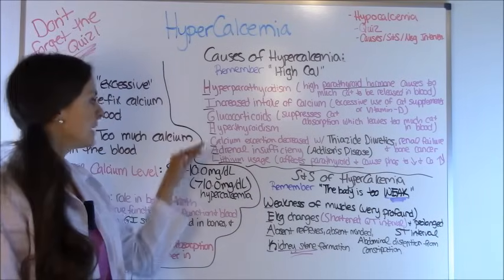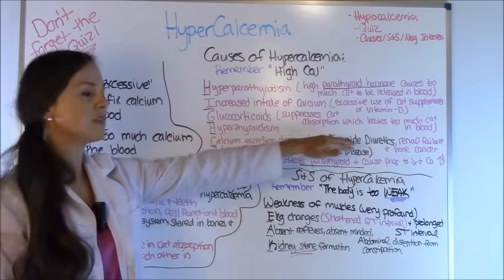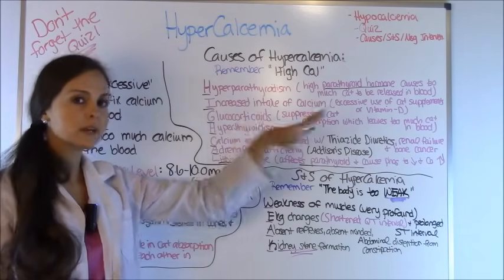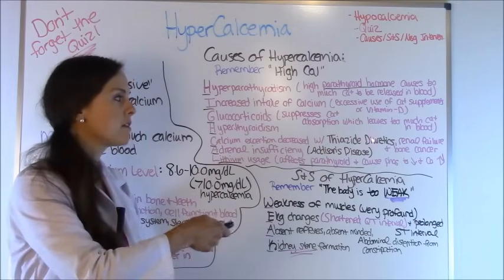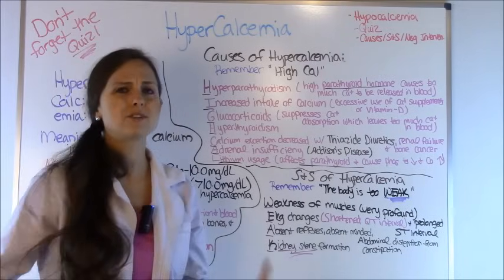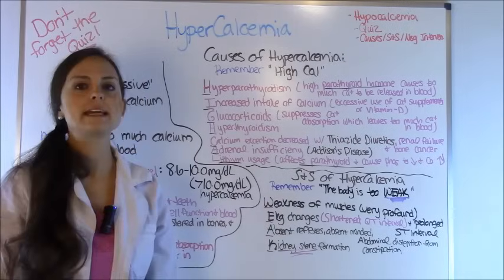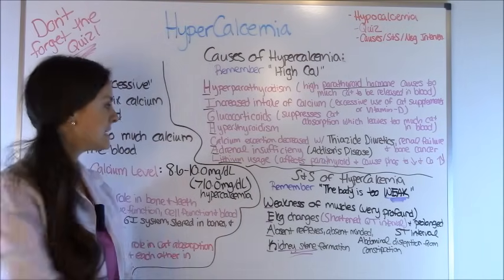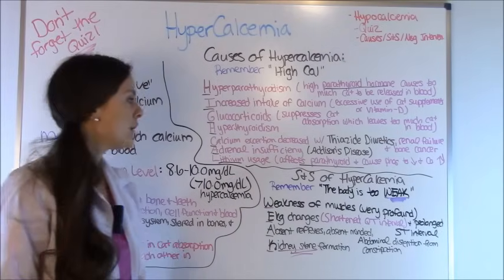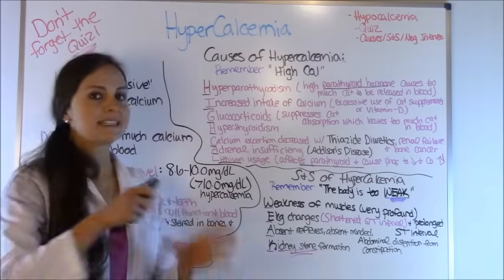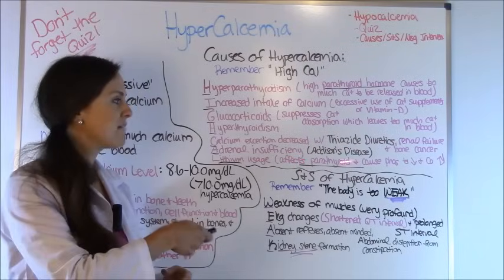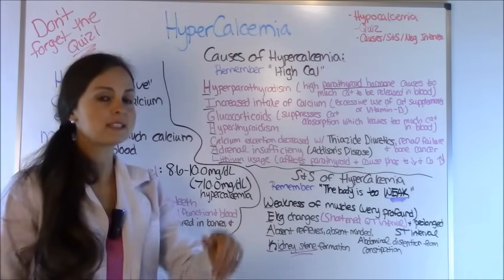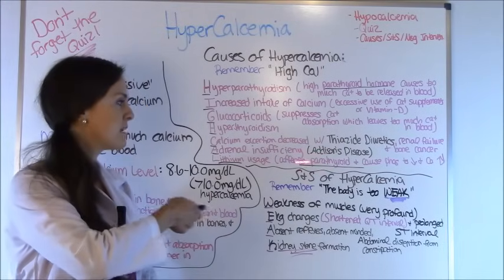H is for hyperthyroidism. C stands for calcium excretion decrease — from thiazide diuretics, renal failure, and bone cancer — which prevents you from getting rid of calcium through the kidneys. Thiazide diuretics are a big test question: drugs like hydrochlorothiazide, anything ending in thiazide, can increase your calcium levels. A is for adrenal insufficiency like Addison's disease. L is for lithium usage — many mental health patients are prescribed lithium, and this is another huge test question. Lithium affects the parathyroid and can cause phosphorus to decrease, so calcium increases.